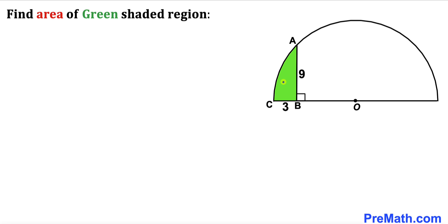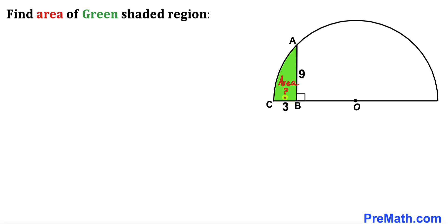In this video we have a green shaded region fully inscribed in a semicircle with center O, such that horizontal segment CB is 3 units, segment AB is 9 units, and angle ABO is 90 degrees. Our task is to calculate the area of this green shaded region.